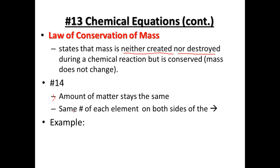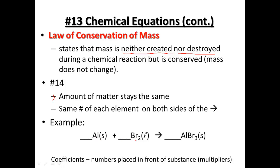A balanced equation has the same number of each element on both sides of the arrow. An example would be aluminum plus bromine produces aluminum bromide from our last section. On the left we have two bromines, and on the right we have three bromines in AlBr₃. We have one aluminum on each side. So right now our aluminums are equal, but there are two bromines on one side and three on the other — we'd be making another bromine atom, and we can't do that.